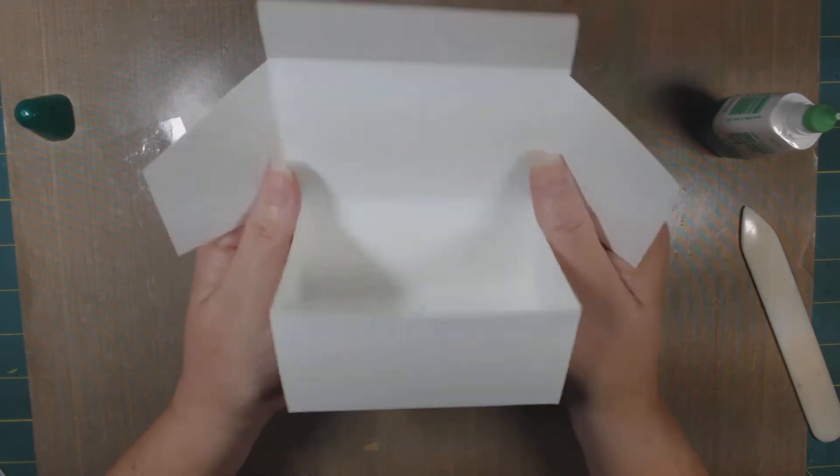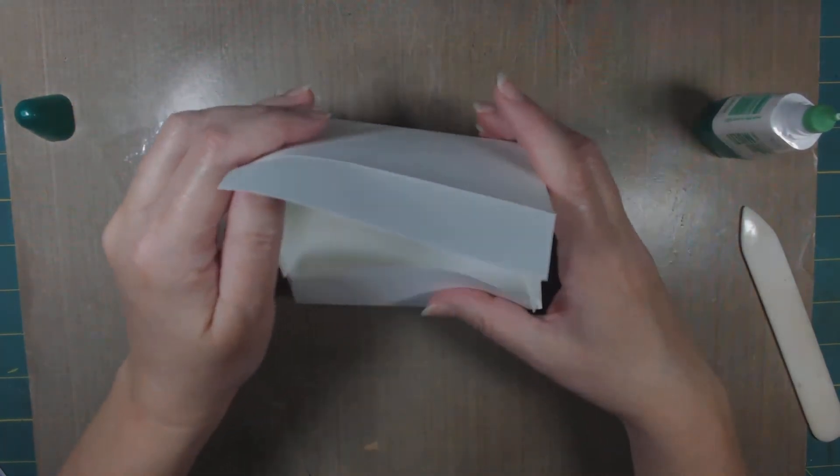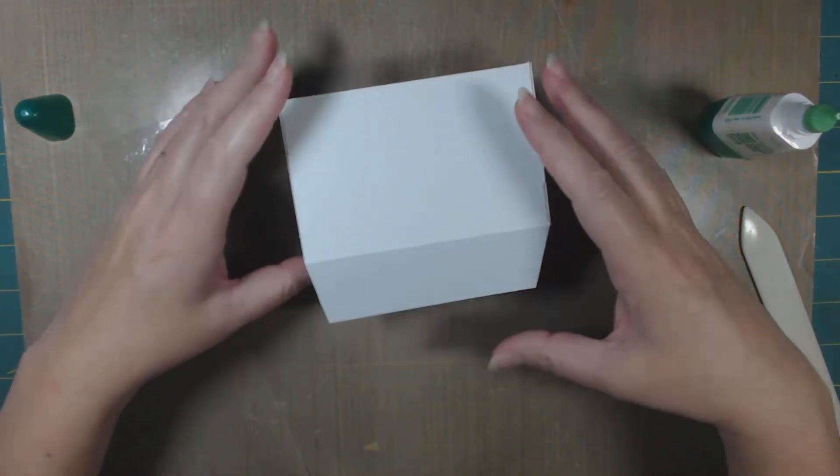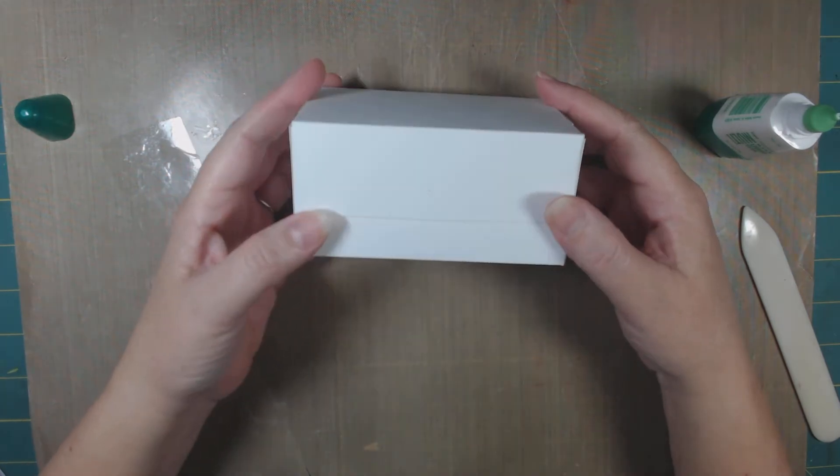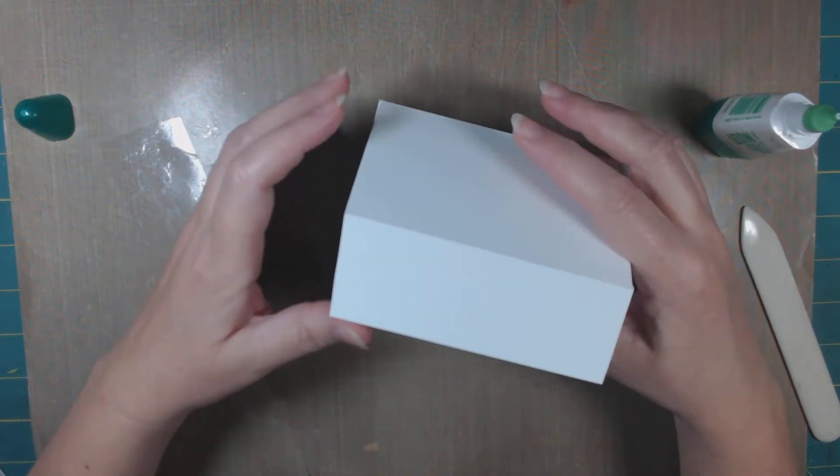And there you go, here's your box. Isn't that cute? Real simple. Then this is where you take these little flaps right here, and these are going to go inside your box. And then here's your little front flap. So there you go, there's your box.